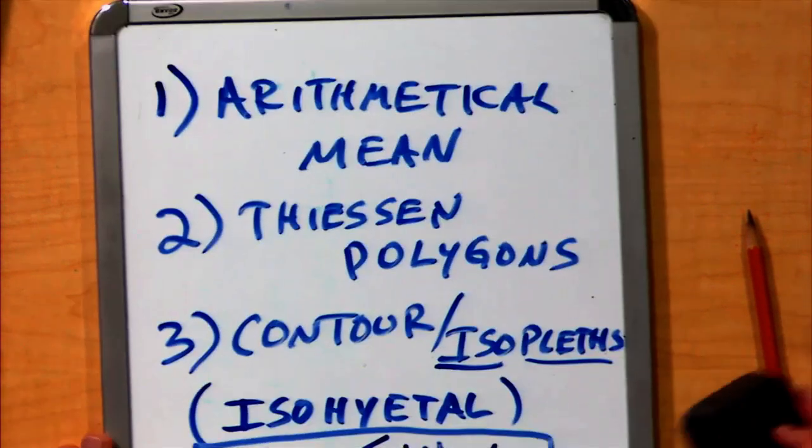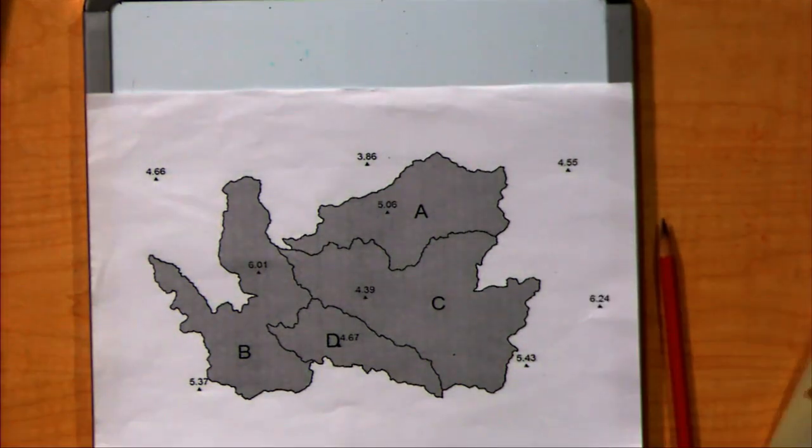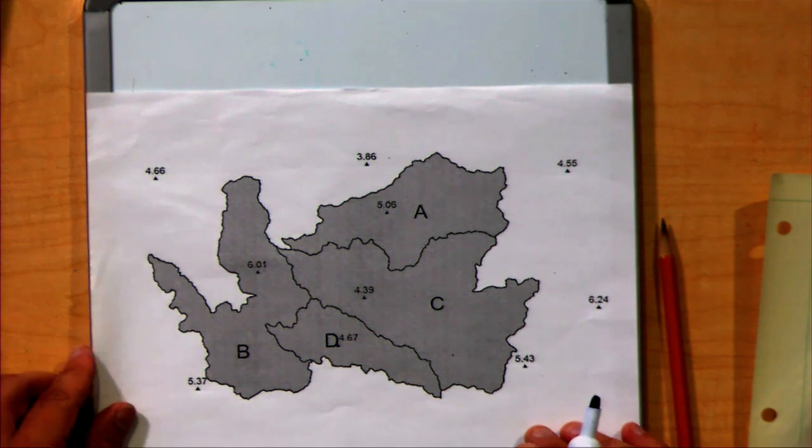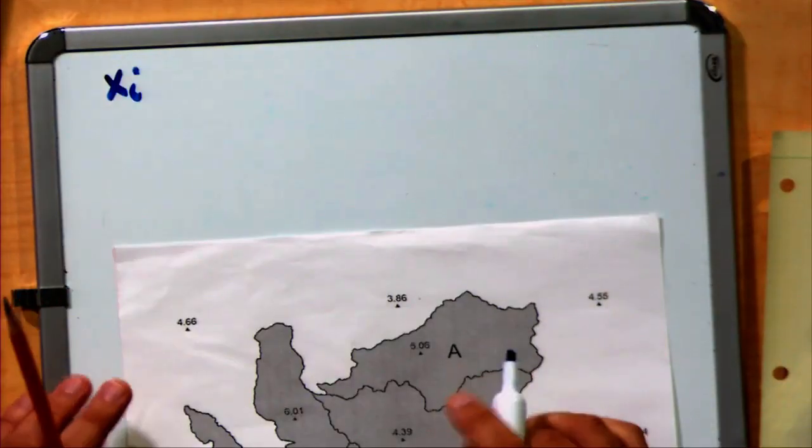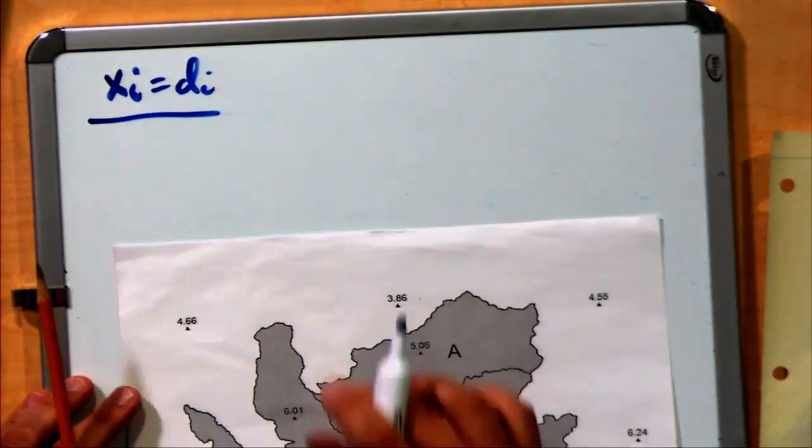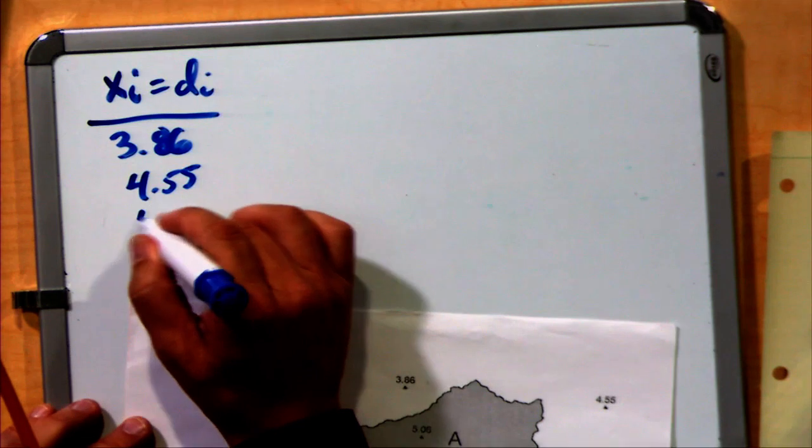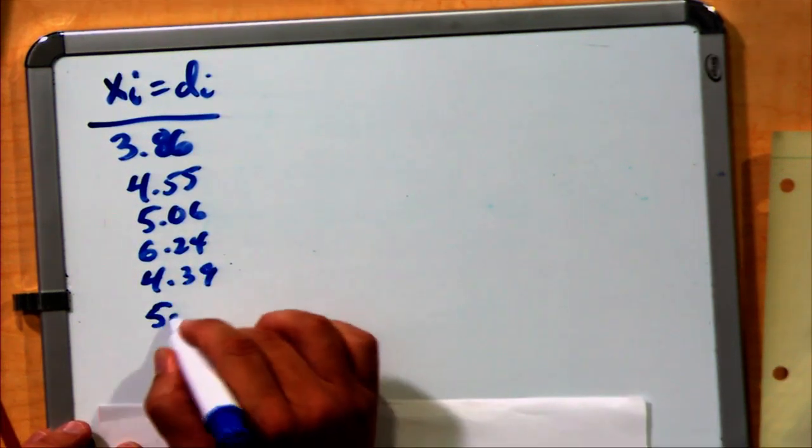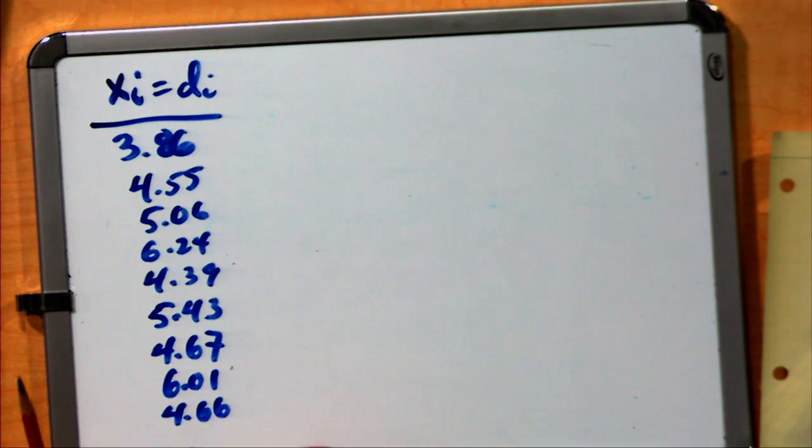Let's consider first the arithmetical mean. Looking at the map, I see there are 10 values. The arithmetical mean is simple: we list the 10 values. The values themselves, the depths, become our xi to find the mean of. Let's record all of them: 3.86, 4.55, 5.06, 6.24, 4.39, 5.43, 4.67, 6.01, 4.66, and 5.37.